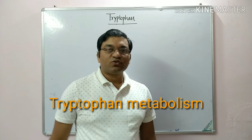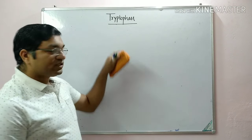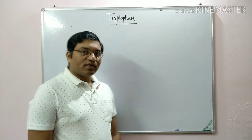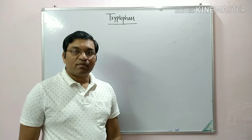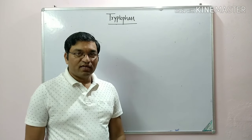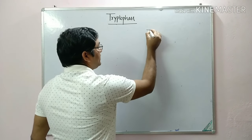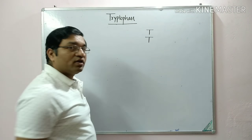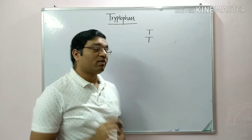Today we will discuss tryptophan, an important essential amino acid. To remember the 10 essential amino acids, use the mnemonic 'MAT WILL FLY.' In this mnemonic, there are two T's — one for threonine and another for tryptophan. Note that tyrosine is not an essential amino acid.